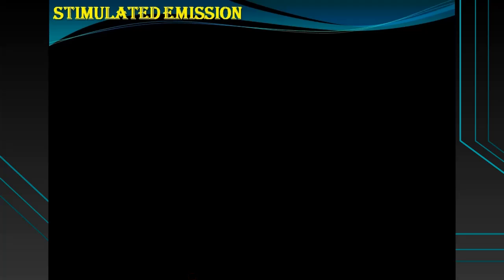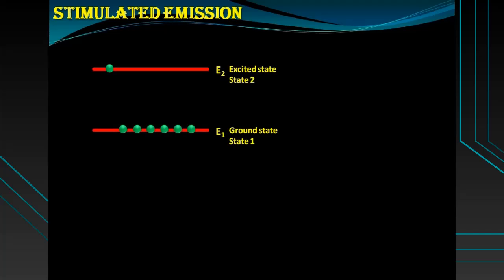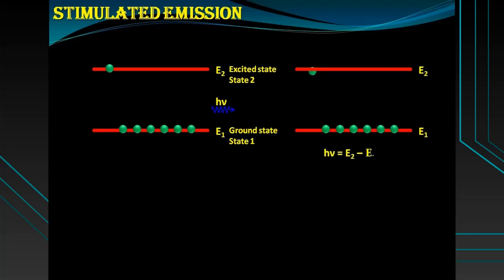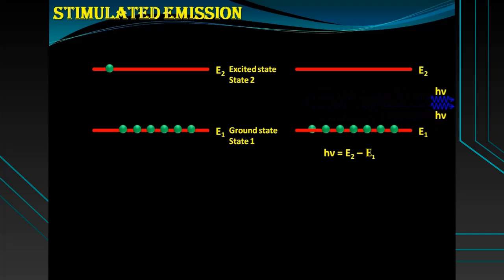This process is called spontaneous emission. What is stimulated emission? The process by which electrons in the excited state are stimulated to emit photons while falling to the ground state is called stimulated emission. If an electron is in the excited state and a photon of energy hν equal to E2 minus E1 is incident on it, after interaction the electron falls back to the ground state by releasing a photon of energy hν.